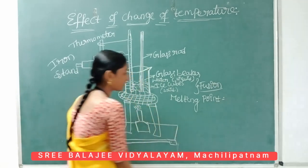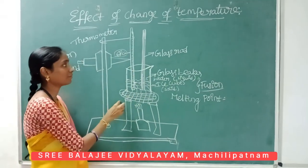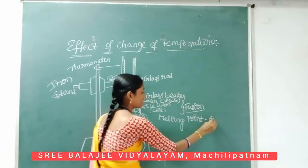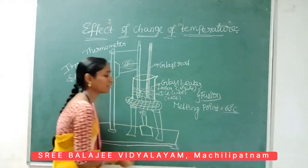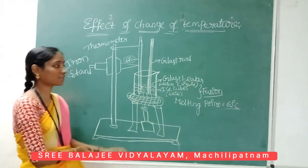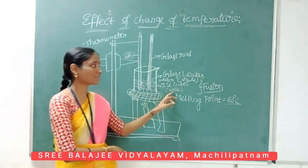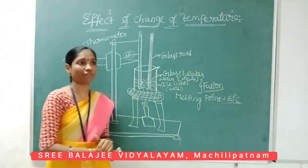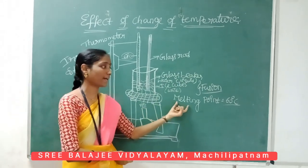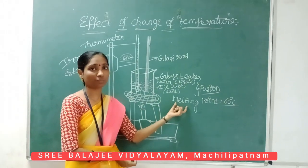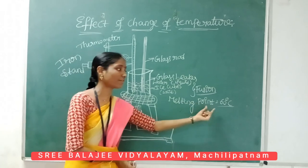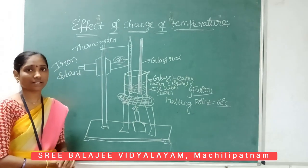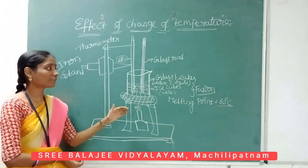So in this activity, the melting point is 60 degrees Celsius. The melting point is the temperature at which a solid phase converts to liquid phase. In this diagram the melting point is 60 degrees Celsius.